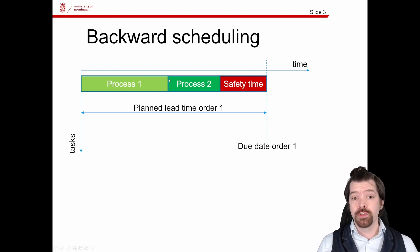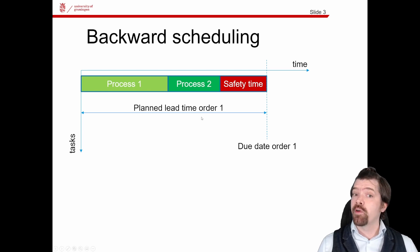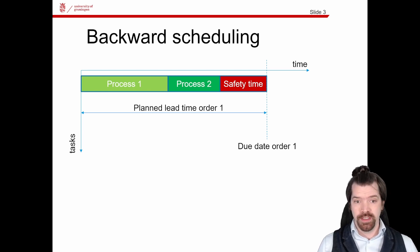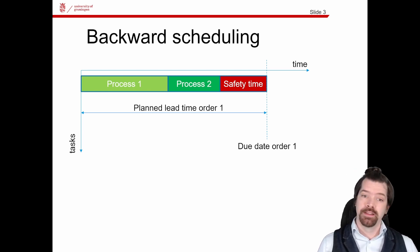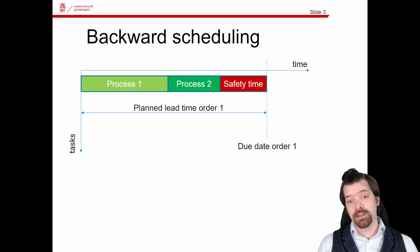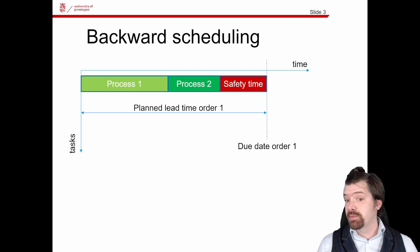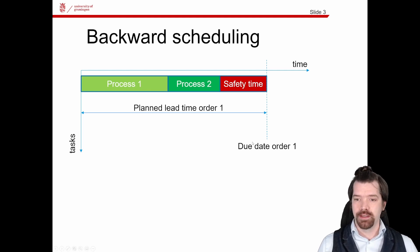For backwards scheduling itself, we just have one planning parameter which is the planned lead time, and it is necessary to define this planned lead time in such a manner that you can meet the customer-required due date.